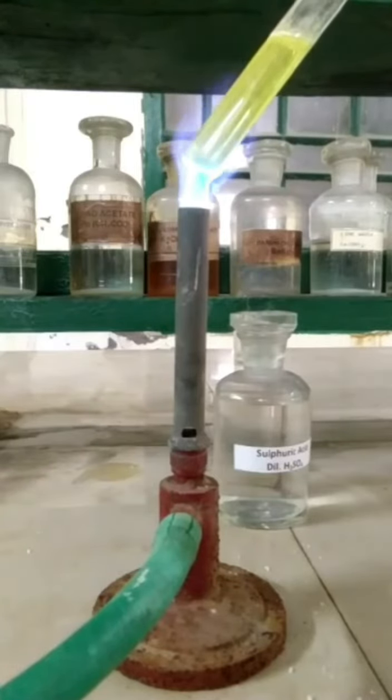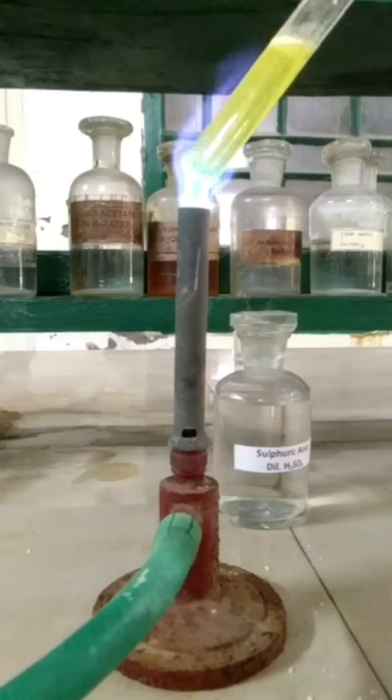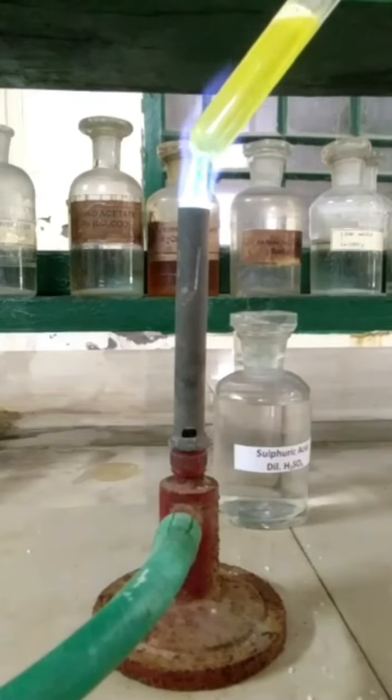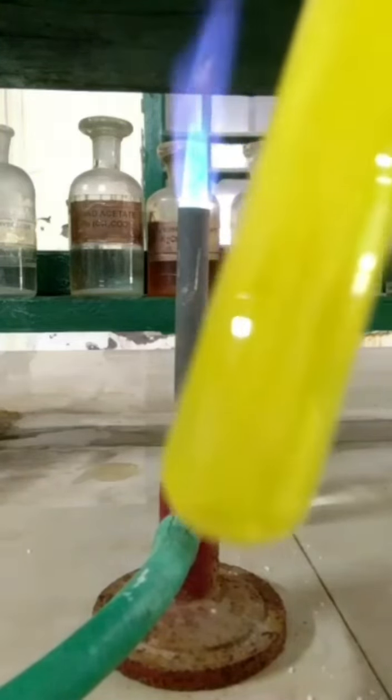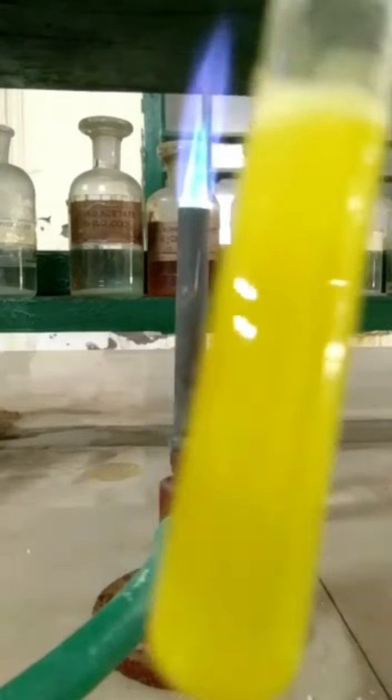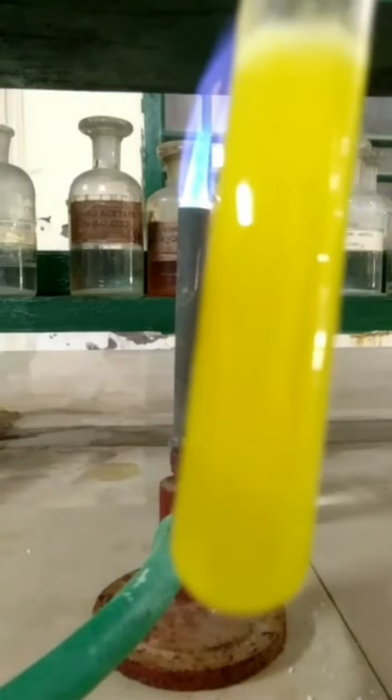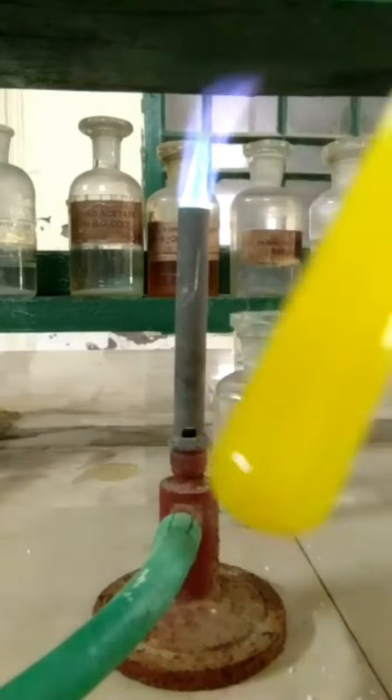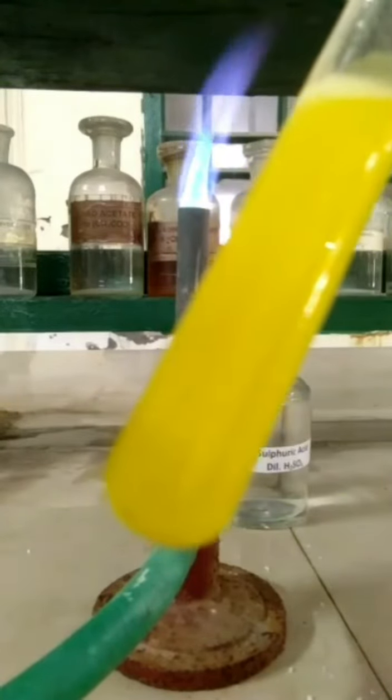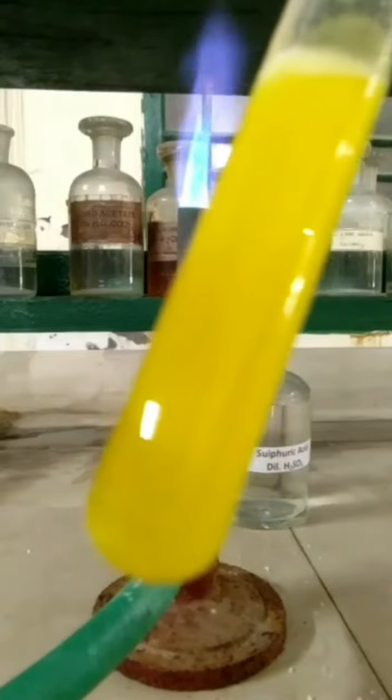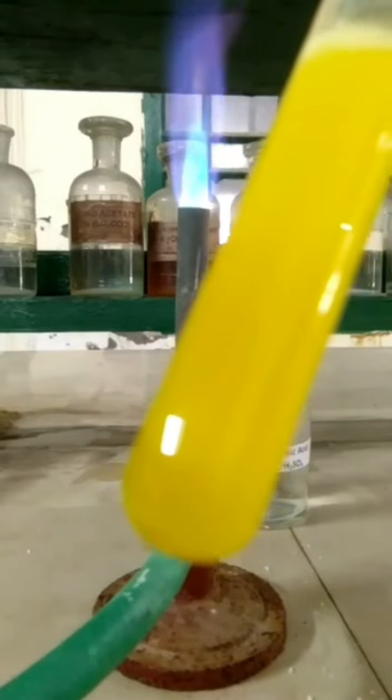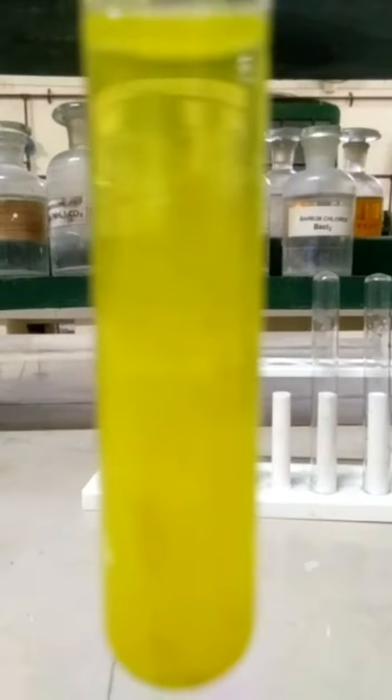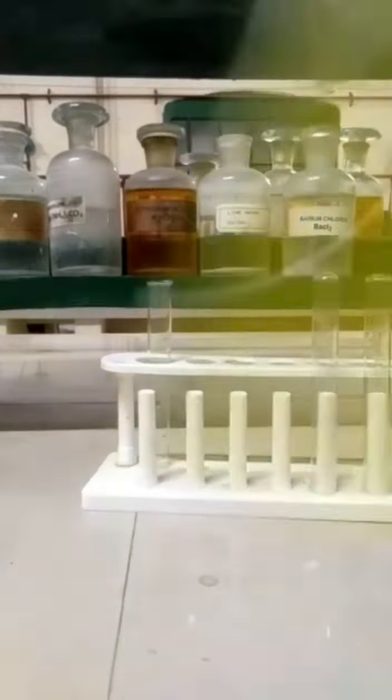Appearance of canary yellow precipitate will confirm the presence of arsenic 3 plus ion in the given salt. This canary yellow precipitate is due to the formation of ammonium arsenic molybdate.